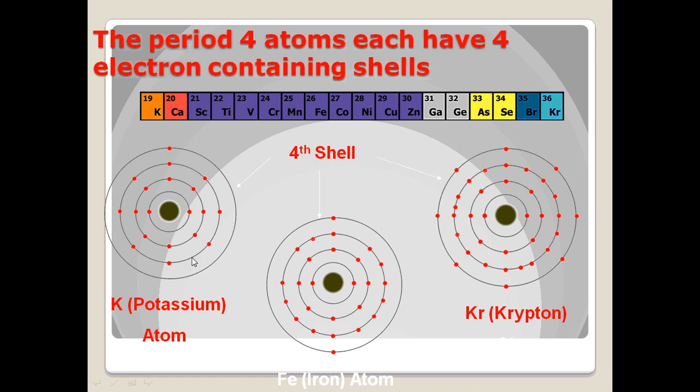Now, the next shell can hold 18, but like I told you, it wants to hold 8. And we know that there are four shells, so there's got to be another shell, and it's got to at least have one electron on it if there's a fourth shell.